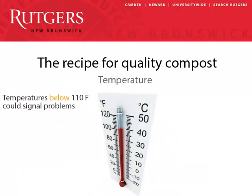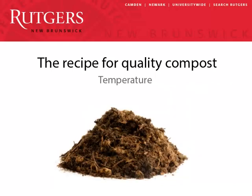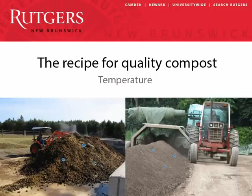If temperatures decline below 110 degrees Fahrenheit early in the process, something may be wrong — you may have too little oxygen, too much or too little water, or too little nitrogen. Your pile also might be too small. Piles should be a minimum of 4 feet wide, 4 feet long, and 4 feet high to generate required temperatures. As the pile matures, the temperature will tend to drop, so it's your job to keep it in range. Turning your pile will rejuvenate microbial activity and increase temperatures again.